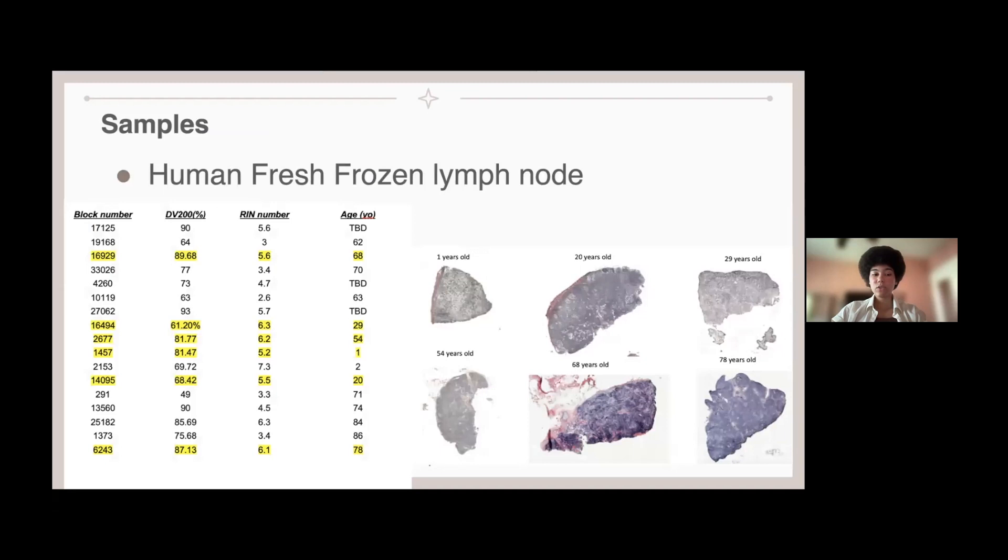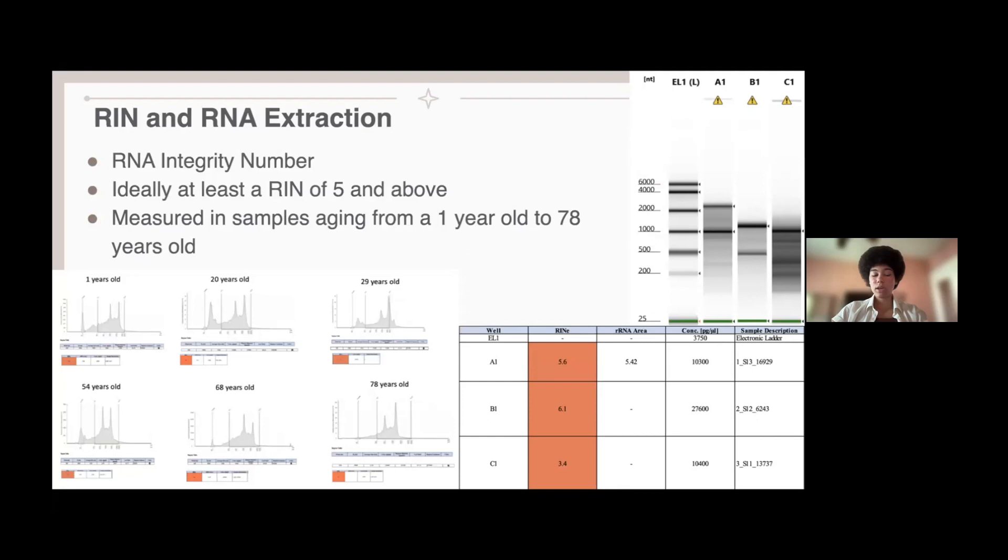The DV200% is the size distribution of the RNA, and it defines a region for fragments larger than 200 nucleotides. And so this RNA RIN number is the RNA integrity number, and it's designed to help evaluate the integrity of the RNA sample. It's on a scale of one to 10, and so obviously a seven to eight is a fairly good number, but ideally we want at least a RIN of five and above.